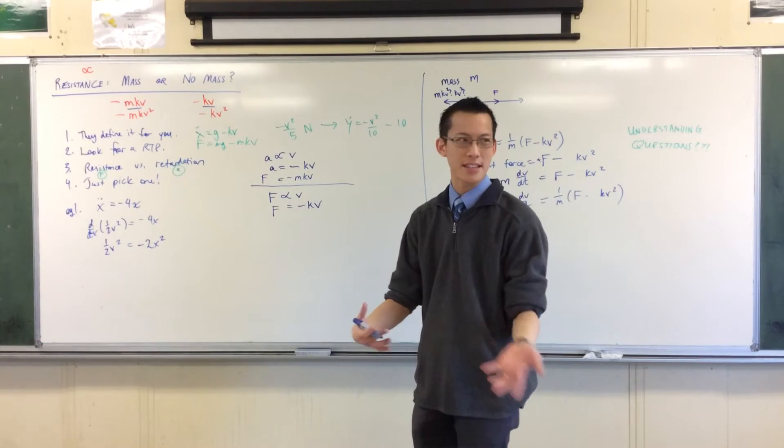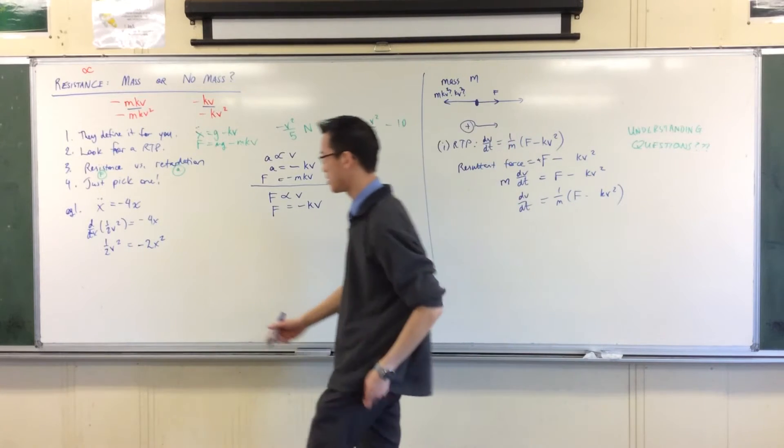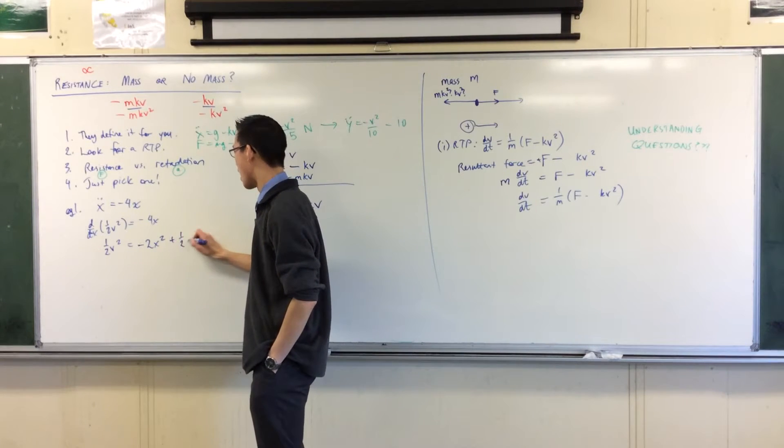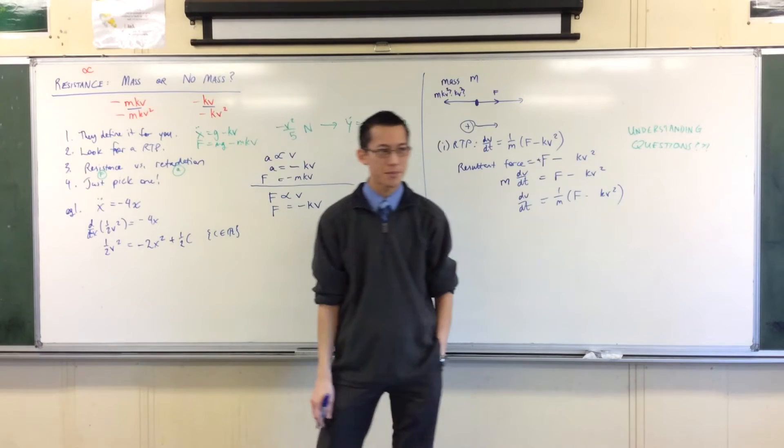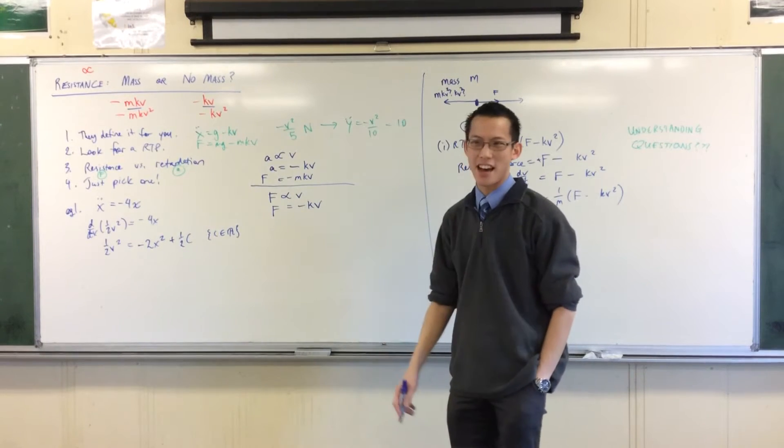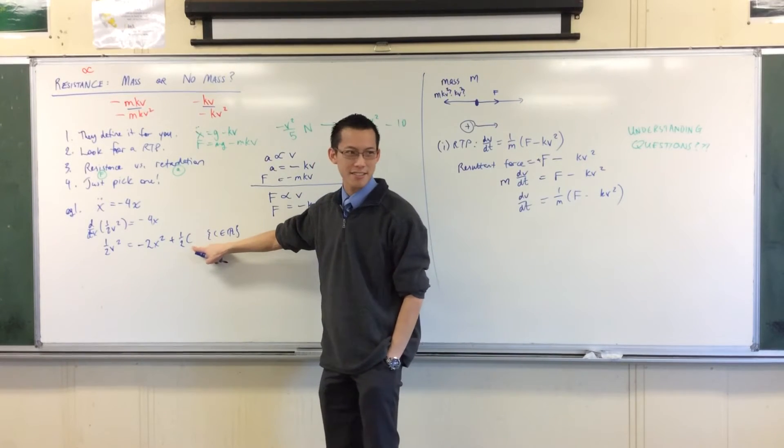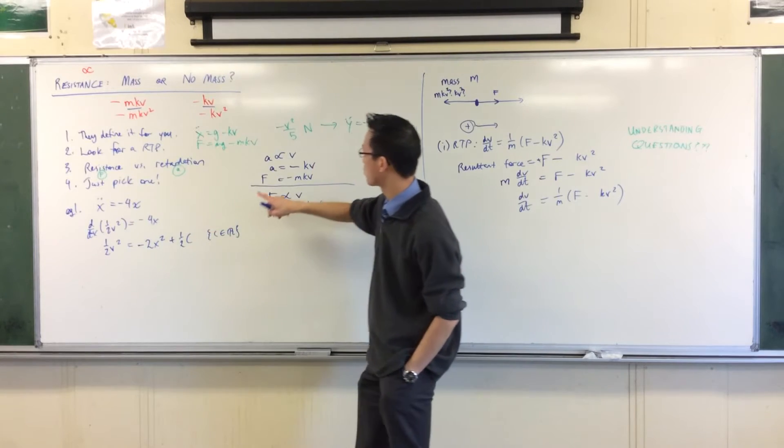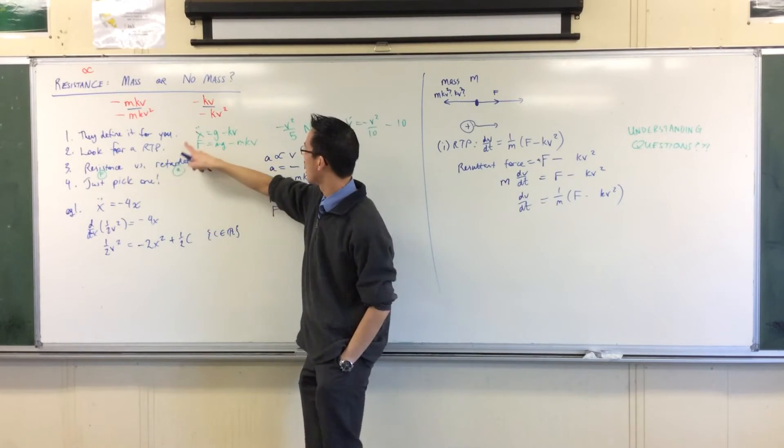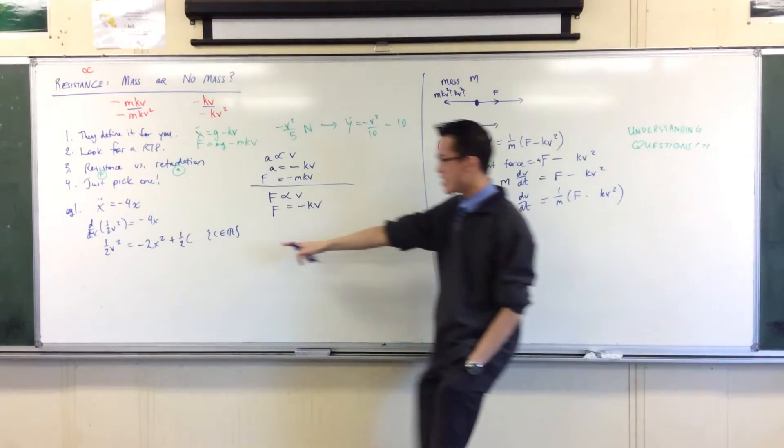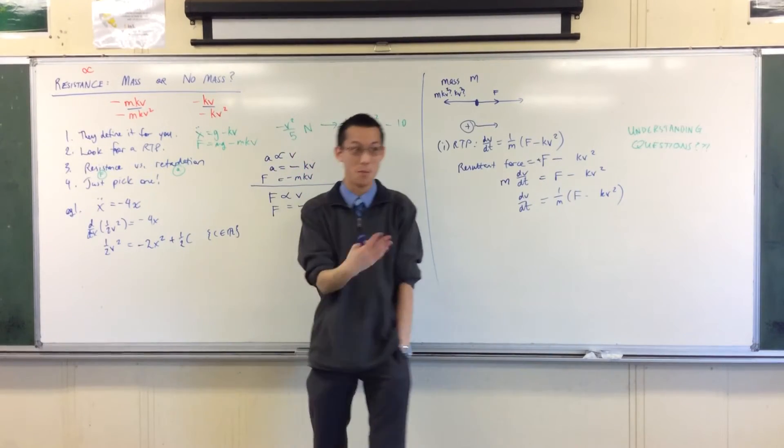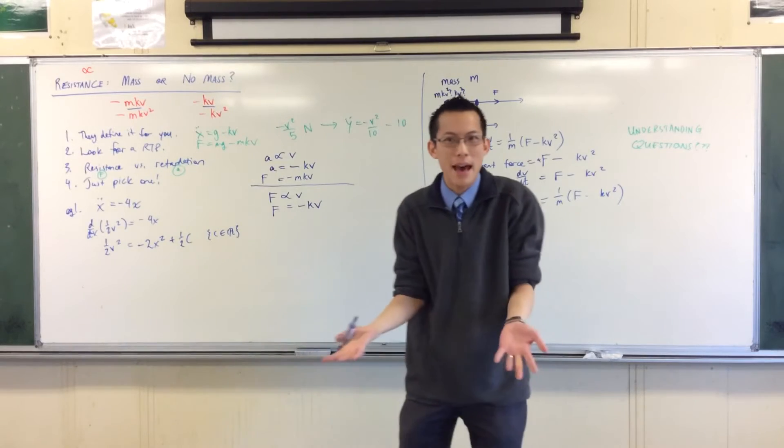However, if you want to make things nice and neat for you, you might notice sometimes the textbook does this. It says, well, let's just call that half c. You're like, wait, what do you mean it's half c? It's c, isn't it? But we're playing the same game that we played before. C, if c is a constant, then half c will also be a constant. So it doesn't matter.